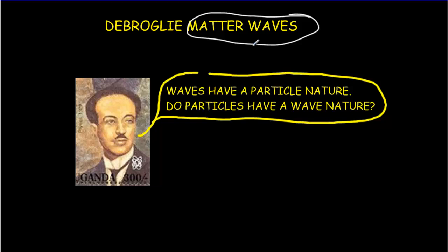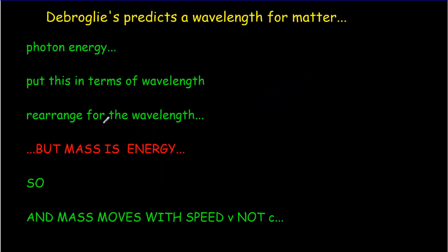He wanted to take that one step farther, and he said, well, what about things that we usually think of as particles, like say an electron — would it have a wave nature? And if it did have a wave nature, how big would the wavelength be? We can go through an ad hoc argument as to what his reasoning must have been in terms of predicting this wavelength for an electron or a particle with matter.